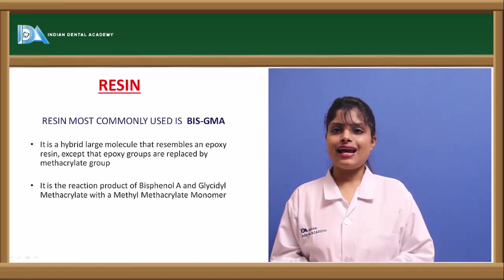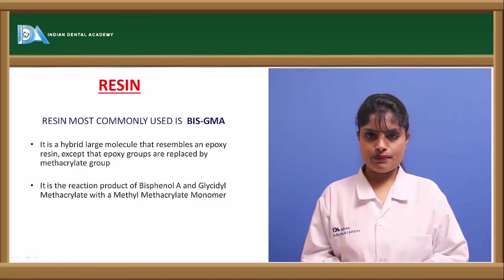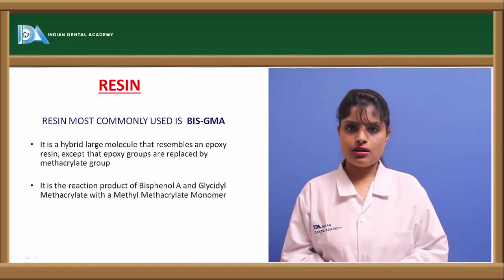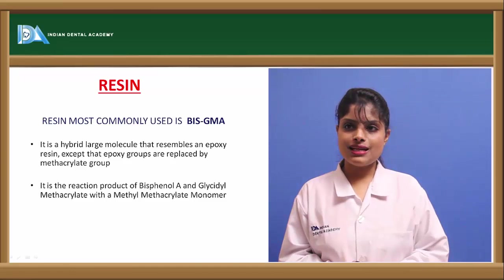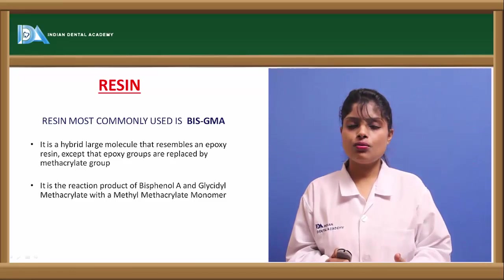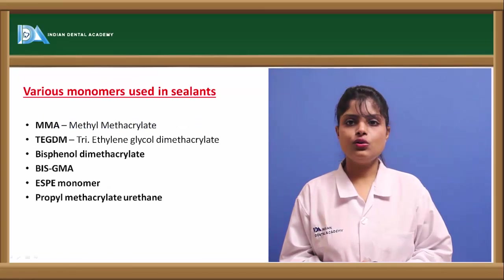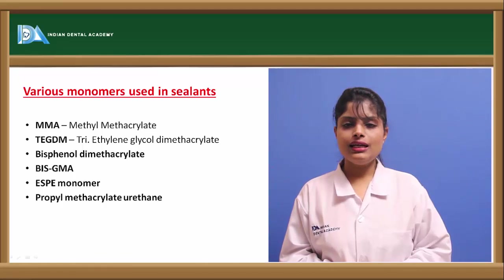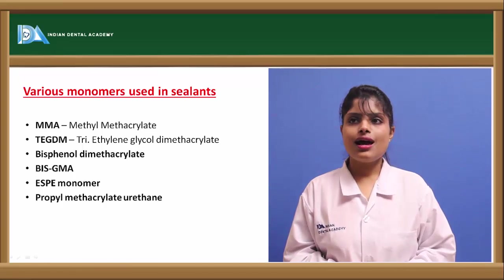Coming over to the various types of sealants, pit and fissure sealants can be of resin type. The resin type contains bis-GMA, that is bisphenol-A glycidyl methacrylate. It is a large molecule formed by the reaction of bisphenol-A, glycidyl methacrylate, and methyl methacrylate. It resembles epoxy resin, and the epoxy groups are replaced by the methacrylate group in bis-methacrylate. The various monomers used in sealants are methyl methacrylate, triethylene glycol dimethacrylate, bis-GMA, ESPE, and propyl methacrylate urethane. Even bisphenol methacrylate is used as a monomer in the sealant.